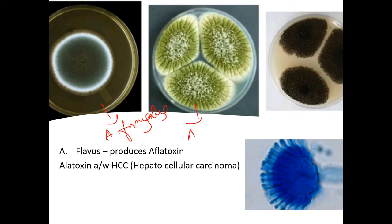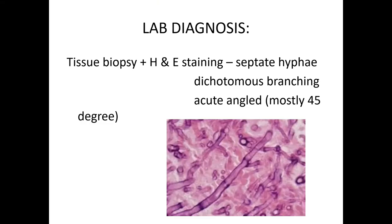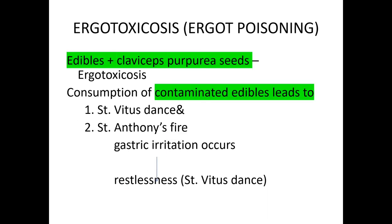These pictures show Aspergillus fumigatus, Aspergillus flavus, and Aspergillus niger on culture. For lab diagnosis, tissue biopsy with H&E staining reveals septate hyphae with dichotomous branching at an acute angle — approximately 45 degrees. This acute septate branching angle is characteristic of Aspergillus.